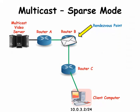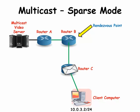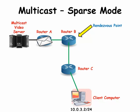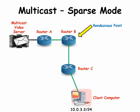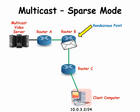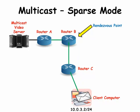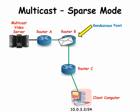We are looking at a simple diagram of a client computer and a server connected together by three routers labeled A, B, and C. We're going to configure the multicast network with these components and we're going to make Router B the rendezvous point.